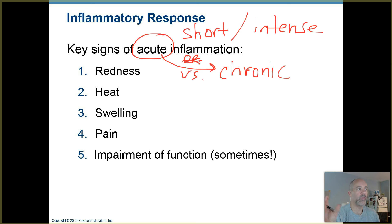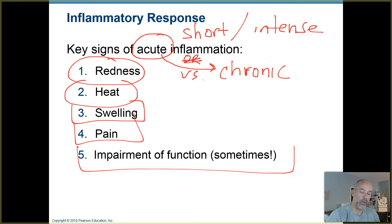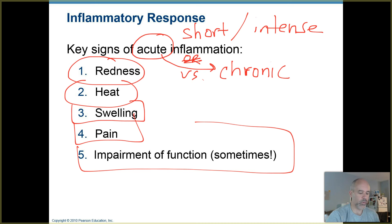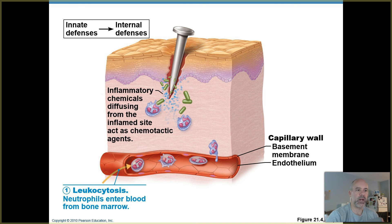Some key signs of inflammation include redness, heat, swelling of tissues, pain, and sometimes impairment of function if you have enough swelling, pain, or scar tissue development. Scar tissue development is something that follows inflammation after an injury or a burn. We'll return to these key signs in a few moments and talk about why they develop.